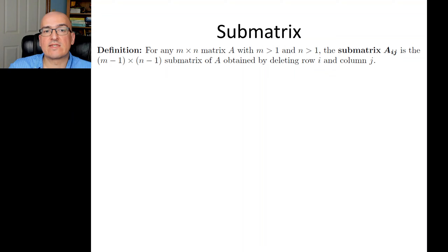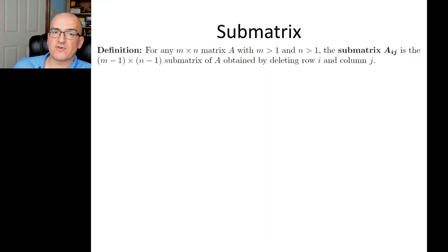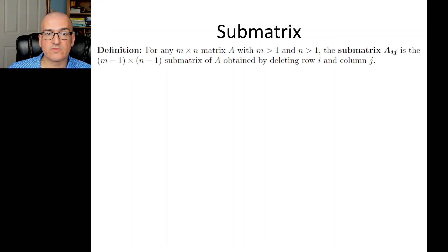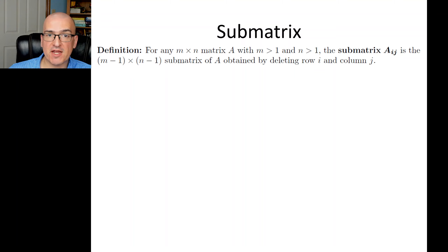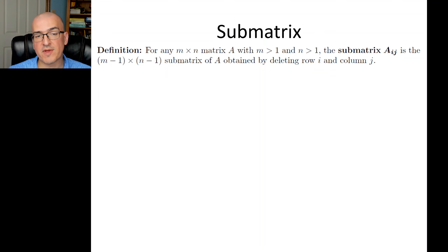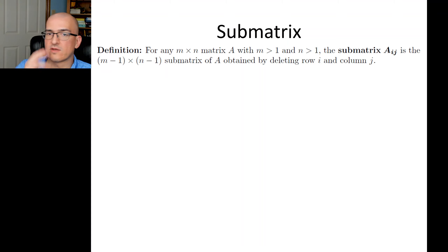What is a submatrix? A submatrix is a piece of a larger matrix. For any M by N matrix — a matrix with M rows and N columns, which does not have to be square — as long as M is greater than 1 and N is greater than 1, the submatrix Aij is going to be a matrix that is one row smaller and one column smaller. Aij is created by deleting row i and column j.